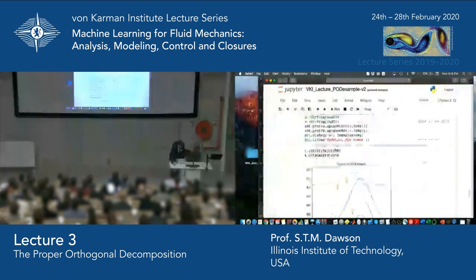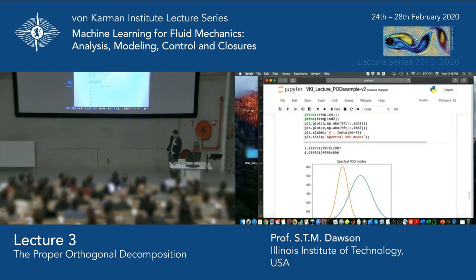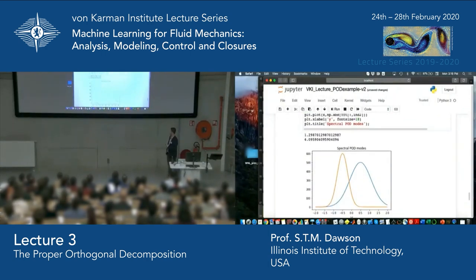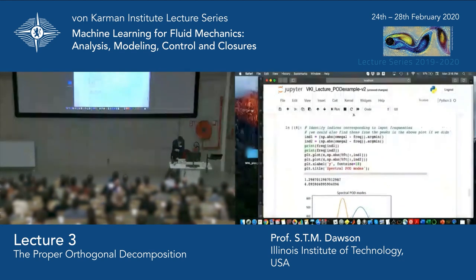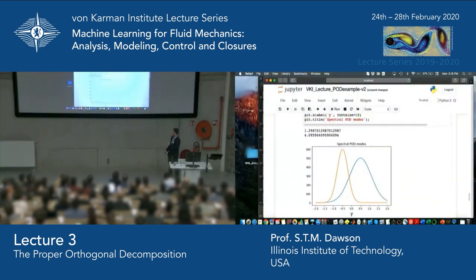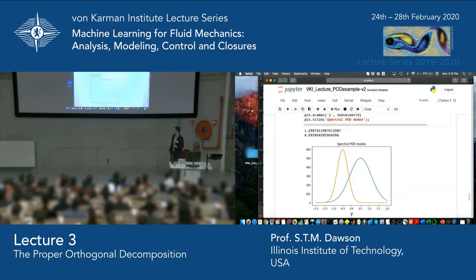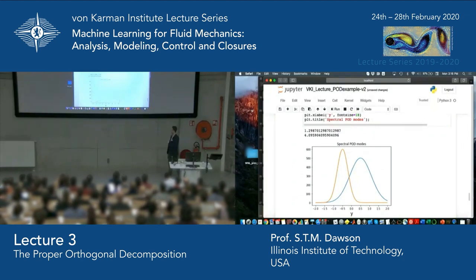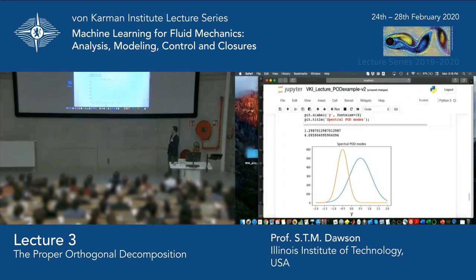The spectral POD modes, which are essentially our Fourier modes, give us back what we had originally — unsurprising since we knew what the data was. The recovered frequencies are the nearest discrete Fourier frequencies to the ones I put in. One important note is that this approach is more restrictive on the temporal properties of your data: in order to compute the Fourier transform accurately, we need sufficient temporal resolution and enough data.